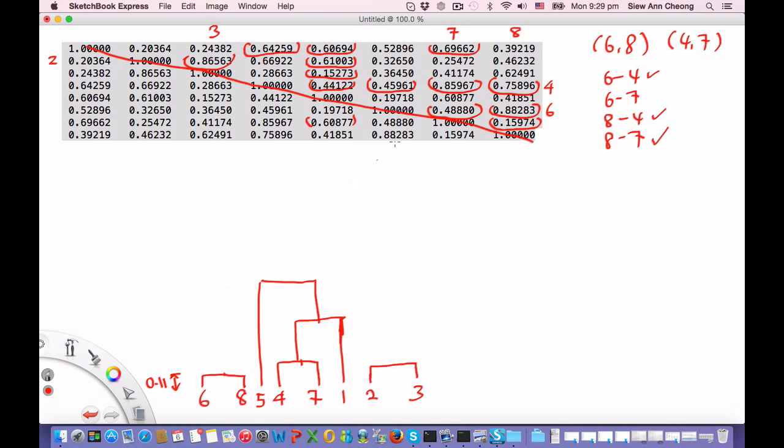And then, the next step, it will probably merge with 6, 8 before it merge with 2, 3. So obviously, I need to do this more carefully. But in the short time that is available for this review, I guess this is a short demonstration of how the agglomerative complete linkage hierarchical clustering algorithm works.